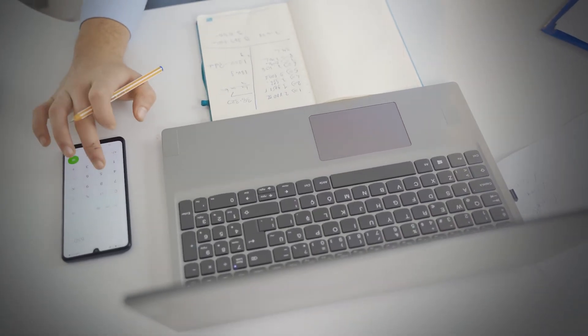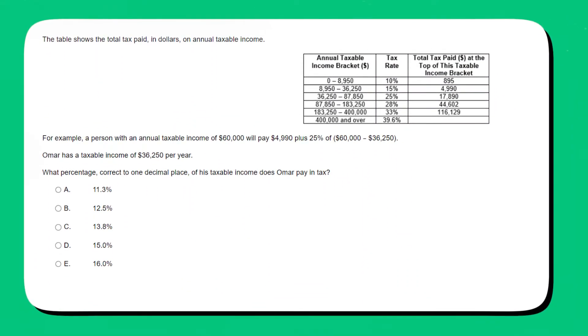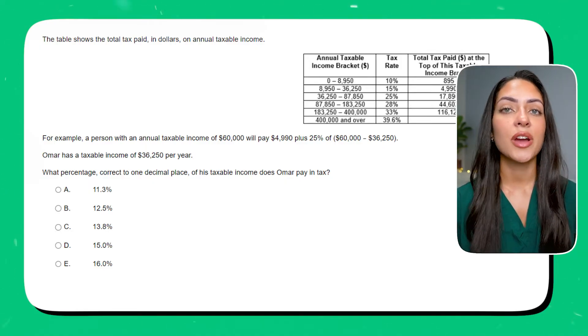Percentages include calculating the portion of a whole as a hundredth. For example, if you are given data on sales growth over a year, you might be asked to calculate the percentage increase in sales from the beginning to the end of that year. Let's have a look at an example. The table shows the total tax paid in dollars on annual taxable income. For example, a person with an annual taxable income of $60,000 will pay $4,990 plus 25% of $60,000 minus $36,250. Omar has a taxable income of $36,250 per year. What percentage, correct to one decimal place, of his taxable income does Omar pay in tax? A: 11.3%, B: 12.5%, C: 13.8%, D: 15%, or E: 16%? Feel free to pause the video here and try to work out the answer.